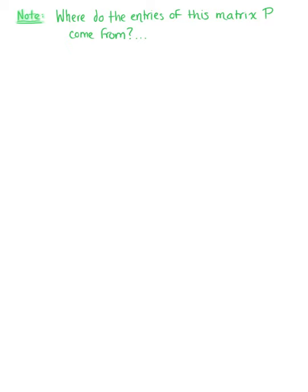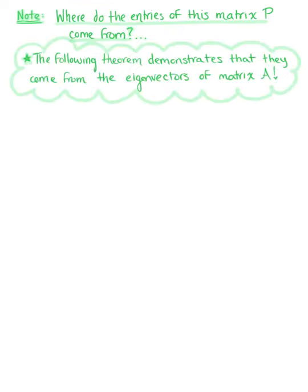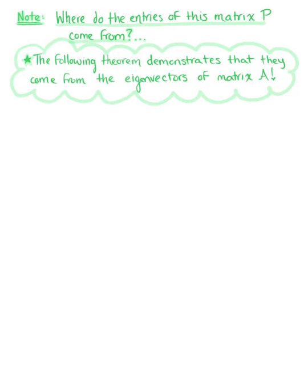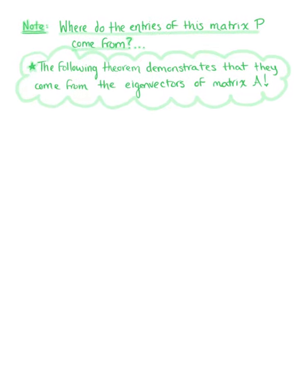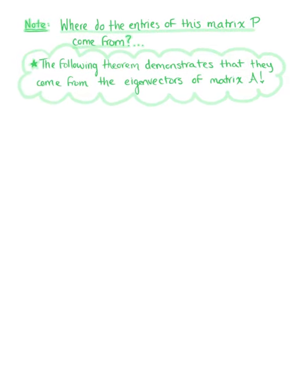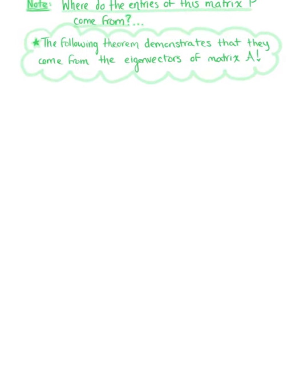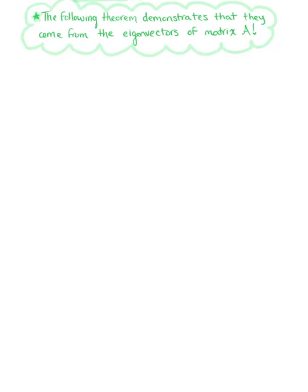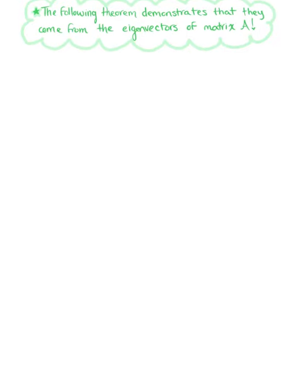So at this point, I think it's fair to assume that you may be asking yourselves: where do the entries of this matrix P come from? The following theorem is going to demonstrate that these entries actually come from the eigenvectors of matrix A.